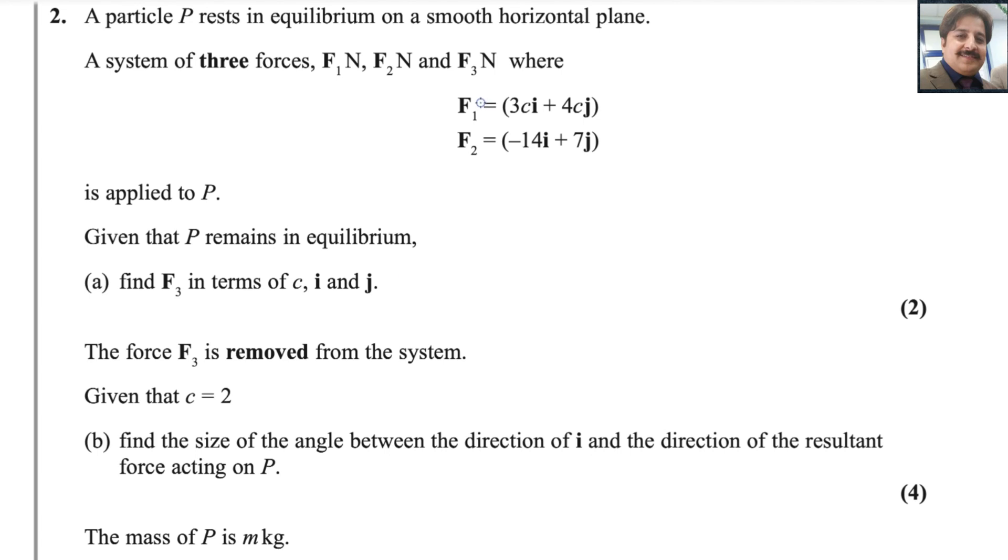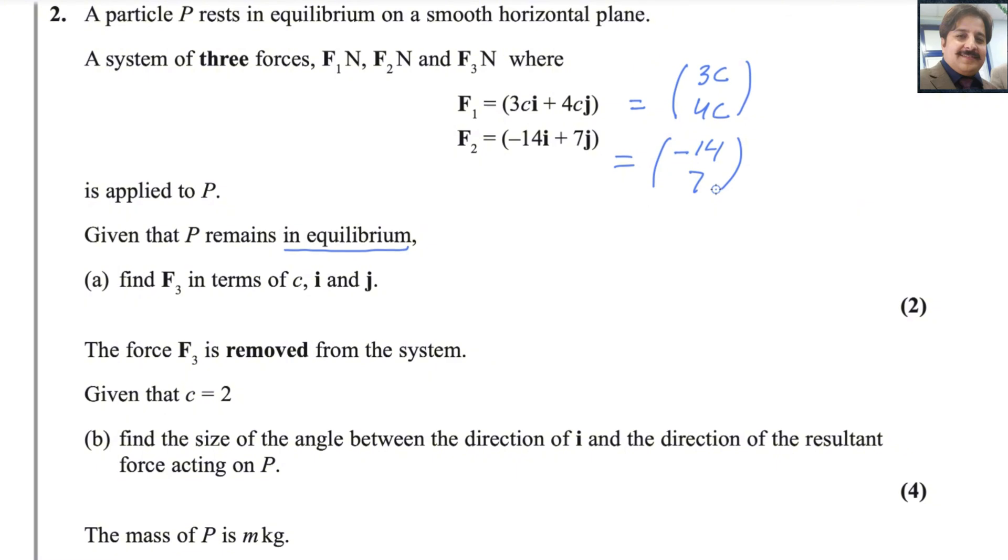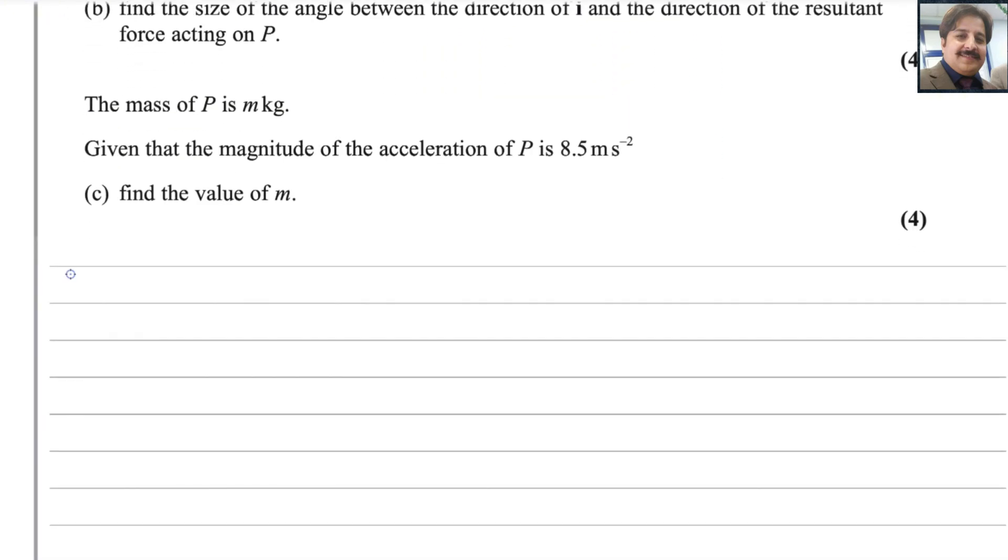We have three vectors: F1, F2 and F3. We need to find F3 and the system is in equilibrium. If the system is in equilibrium, the sum of all these forces should be equals to zero. In equilibrium, F1 plus F2 plus F3 should be equals to zero.